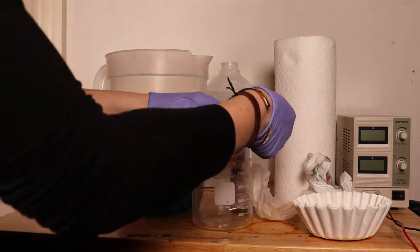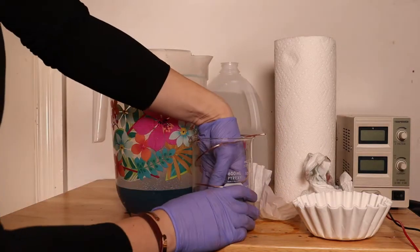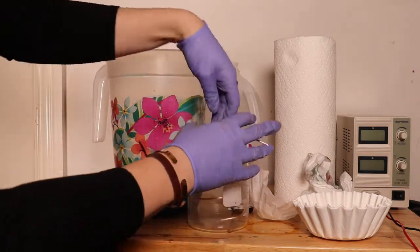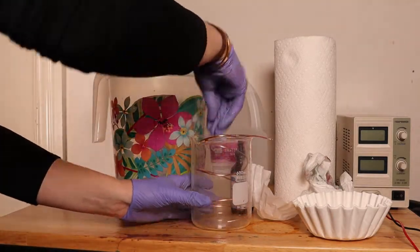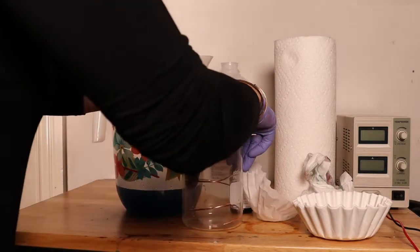Before I add my solution for the last time, I'm adding my 12 gauge anode to the inside of my beaker. And you just want to make sure it lines the inside and you have about an inch dangling over the edge.